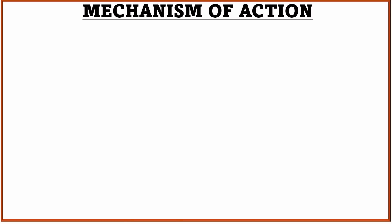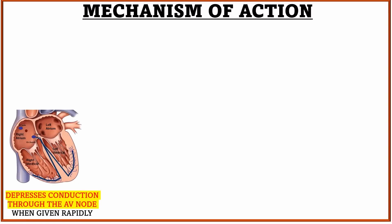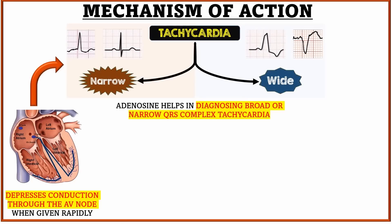Moving to its mechanism of action: Injection Adenosine depresses the conduction through the AV node and thus restores the normal heart rhythm. Injection Adenosine also helps in diagnosing broad or narrow QRS complex tachycardia.